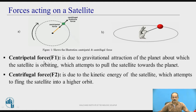Let us see those definitions. Centripetal force F1 is due to gravitational attraction of the planet about which the satellite is orbiting. The earth is the planet here and the satellite revolves around it, so the gravitational force towards the planet attempts to pull the satellite towards the planet. Centrifugal force F2 is due to the kinetic energy of the satellite, which attempts to fling the satellite into a higher orbit — that is, it tries to fling it out of its orbit. When these two forces are equal, the satellite remains in its stable orbit.